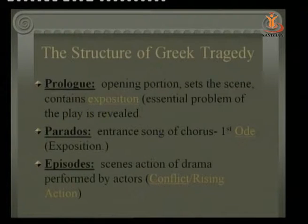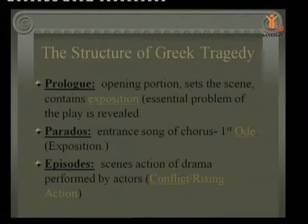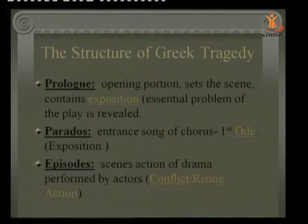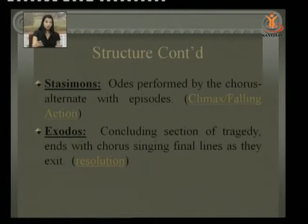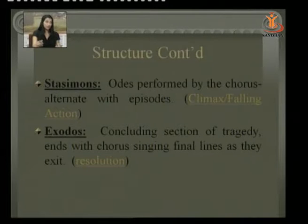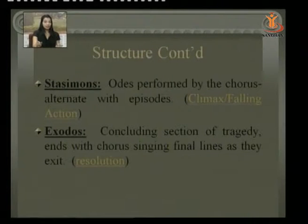The structure of a Greek tragedy: first, the Prologue — the opening portion that sets the stage and contains exposition. Then Parados — the entrance song of the chorus, which also provides exposition. Then there are Episodes — scene by scene actions, possible conflict, and rising action. Then Stasima — odes performed by the chorus alternating with episodes, where you can find the climax and the falling action. Finally, Exodus — the conclusion, where the chorus sings final lines as they exit, providing resolution.